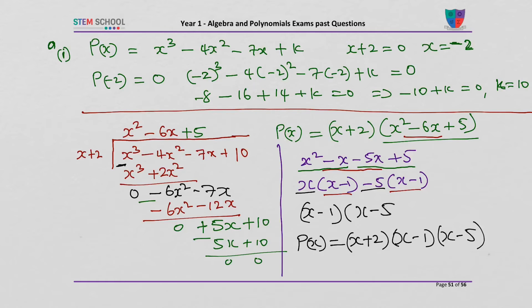So my three linear factors for P of x are x plus 2, x minus 1, and x minus 5. They are called linear because the power of x is 1 — the highest exponent is 1.